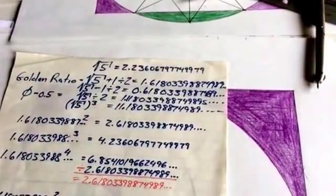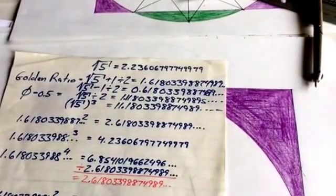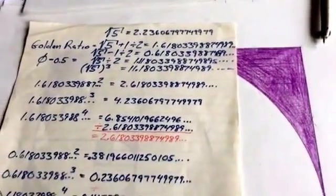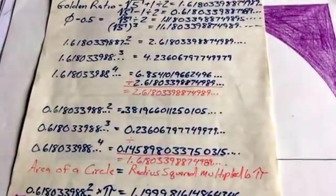Or if you divide the 2.618 from 4.23, so then you'll get the golden ratio again, 1.618. And vice versa, you can see how the inverse works as well.